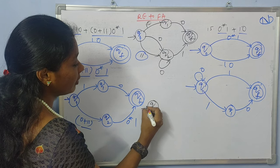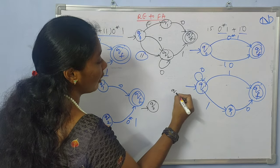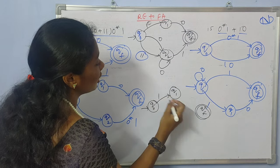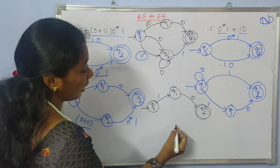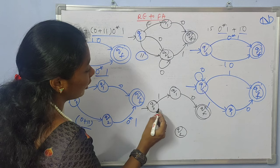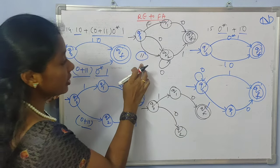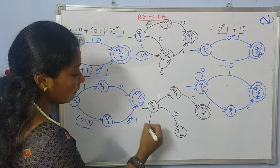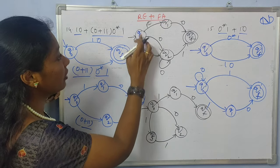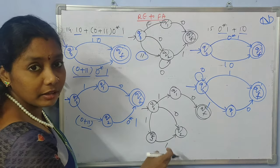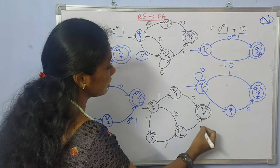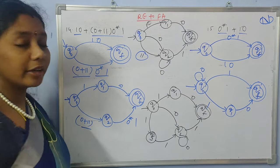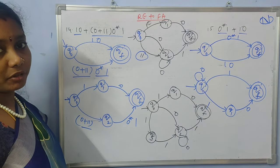The 11 part is a concatenation, so we need to introduce another state q3 between q0 and q2. From q0 to q3 we take input 1, and from q3 to q2 we take another input 1. From q2 we have a self loop with 0 for the 0* closure, and then we reach the final state with input 1. So finally this is the required finite automata for the given regular expression 10 + 0+110*1.